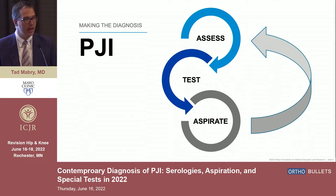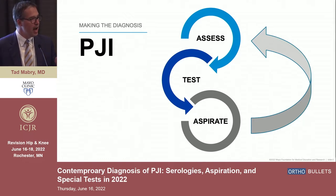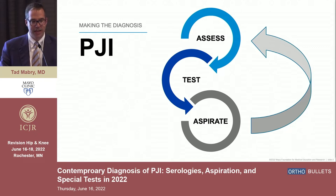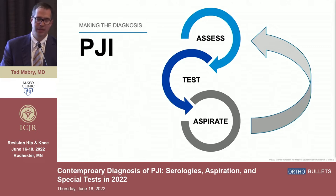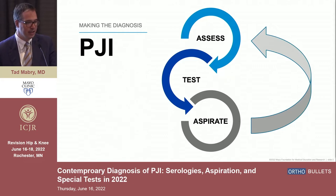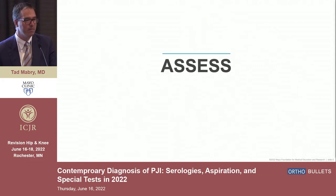This fourth arrow is extremely important. Some of these cases are not going to be solved the first time through the algorithm, and rather than bailing out and going right to the OR hoping for the best, sometimes the best thing to do is to pause, reassess the patient a few weeks later, and oftentimes that will lead you to the correct diagnosis. Never be afraid to rely on that fourth arrow.